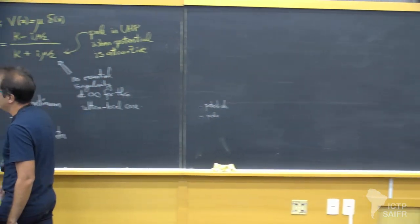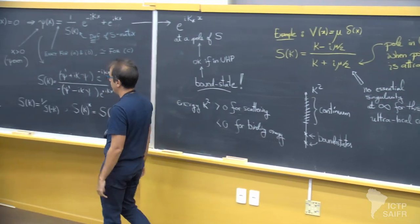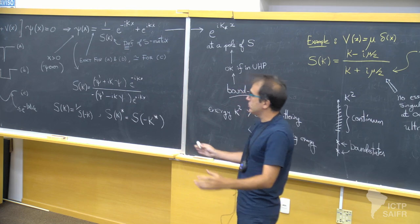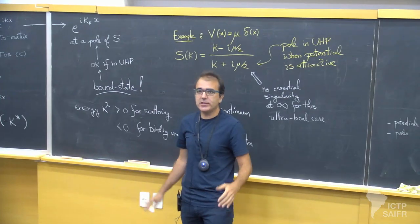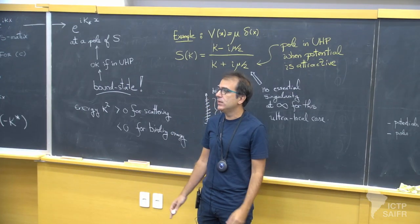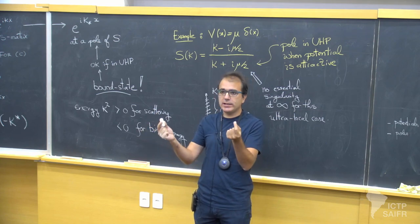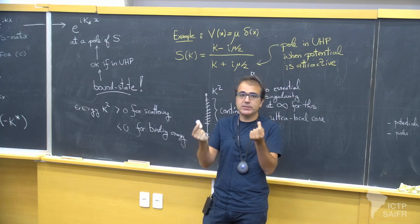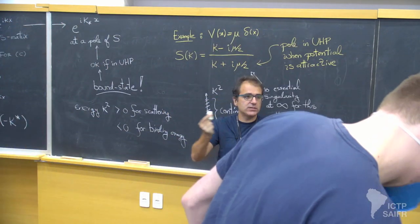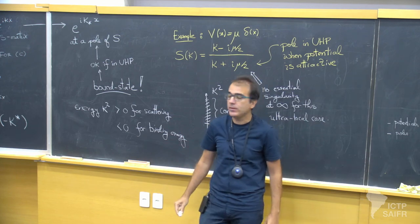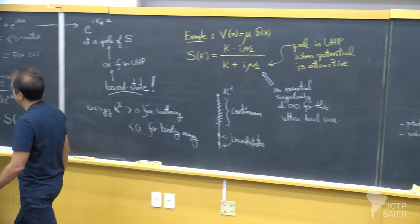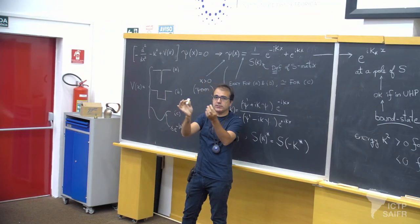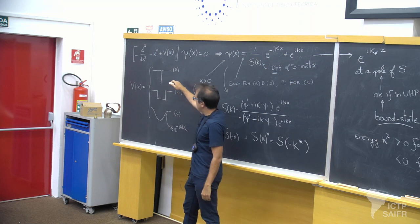Let me summarize what we have seen so far. Our microscopic theory — our theory of everything if you want — is the Schrödinger equation that describes the interaction between two identical particles of mass m. We go to the center of mass and it effectively becomes an equation for a single separation, as if it were a single particle in a potential V. This potential V, which depends on the separation between the two particles, can be of three types.